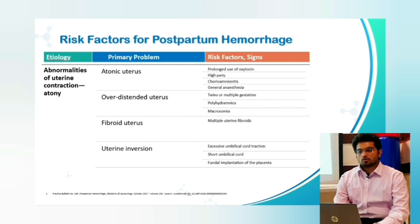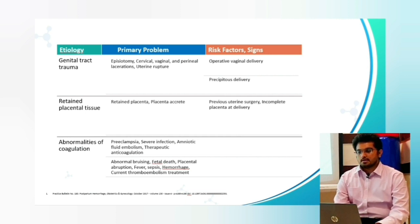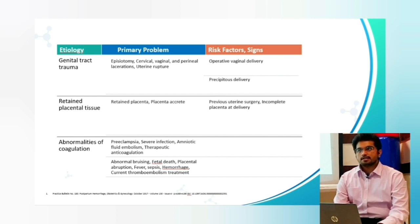Genital tract trauma can occur because of episiotomy, cervical, vaginal, and perineal tears, or uterine rupture, with risk factors being operative vaginal deliveries or precipitous delivery — where the entire first and second stage of labour is completed within 3 to 4 hours, mainly seen in multiparous pregnancies. Retained placental tissues include retained placenta, placenta accreta, or placenta accreta spectrum, with risk factors being previous uterine surgeries or incomplete delivery of the placenta. Abnormalities of coagulation are caused by preeclampsia, severe infection, amniotic fluid embolism, anticoagulation therapy, abnormal bruising, fetal death, placental abruption, fever, sepsis, or recurrent thromboembolic events.